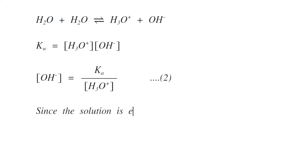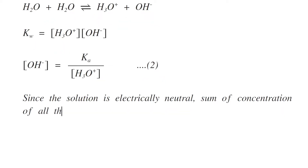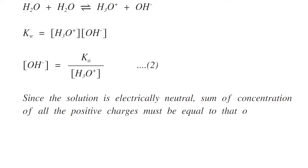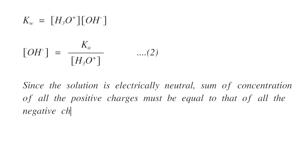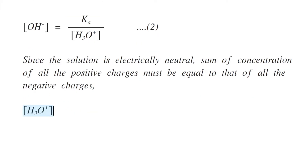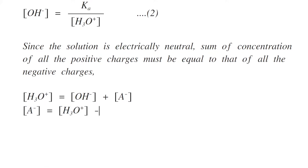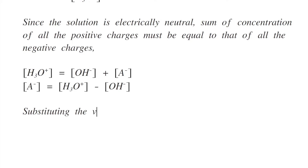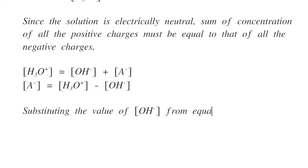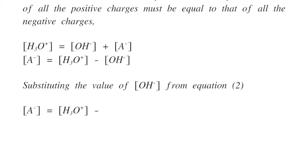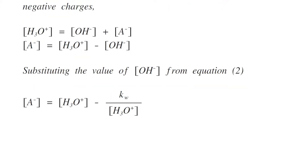Since the solution is electrically neutral, the sum of concentrations of all positive charges must equal all negative charges. So [H₃O⁺] = [OH⁻] + [A⁻]. Rearranging, [A⁻] = [H₃O⁺] − [OH⁻]. Substituting the value of [OH⁻] from equation two, we get [A⁻] = [H₃O⁺] − Kw/[H₃O⁺]. This is equation number three.